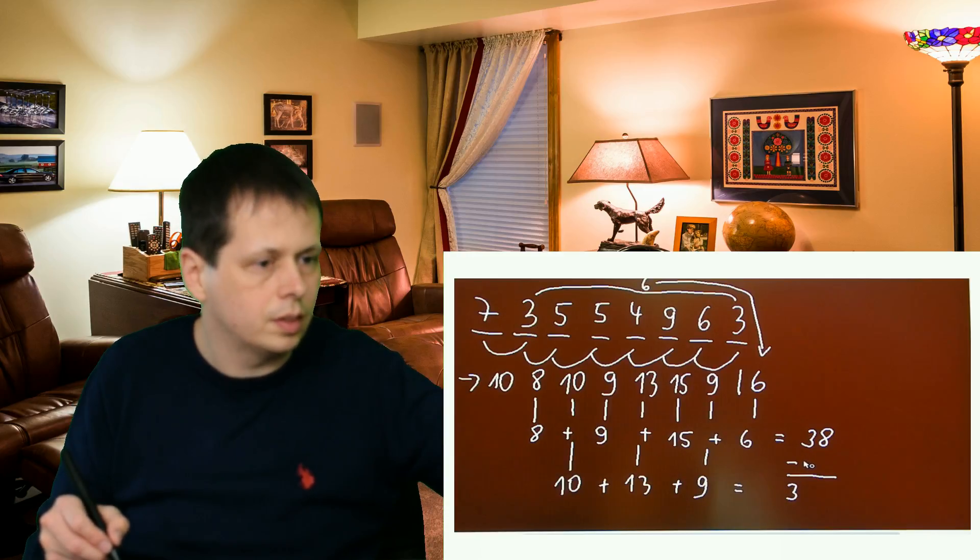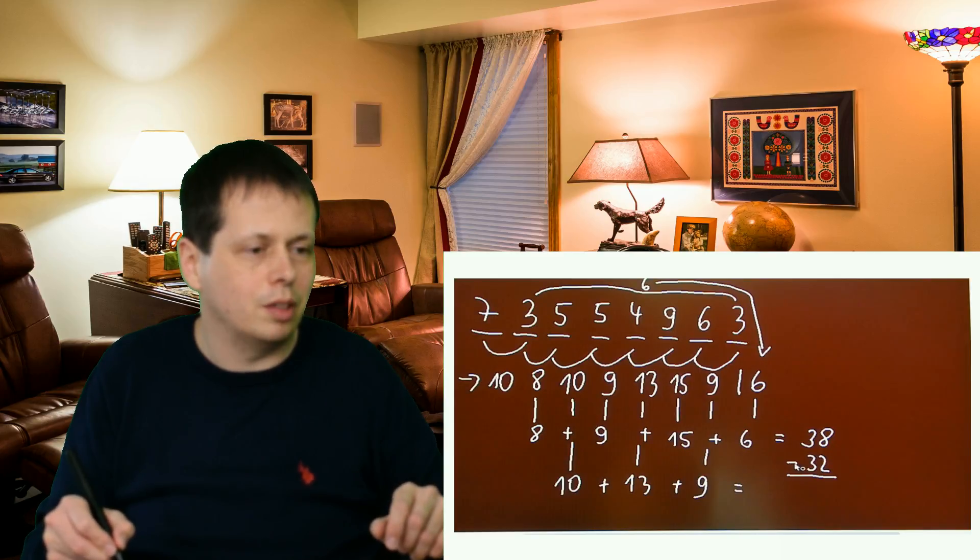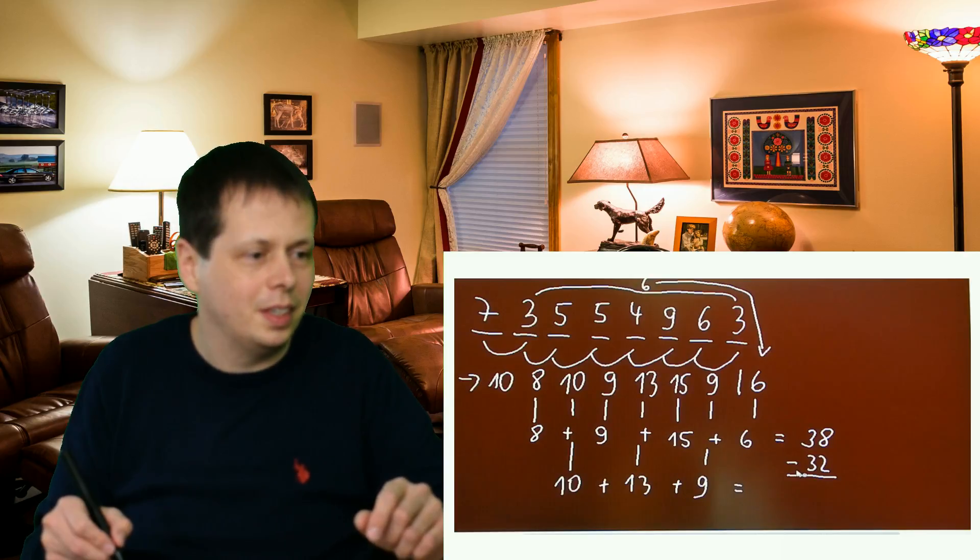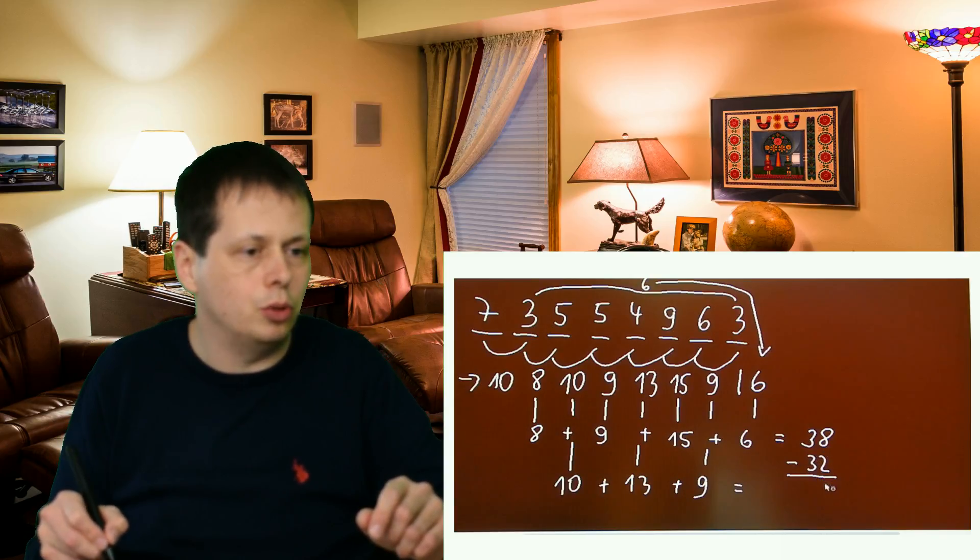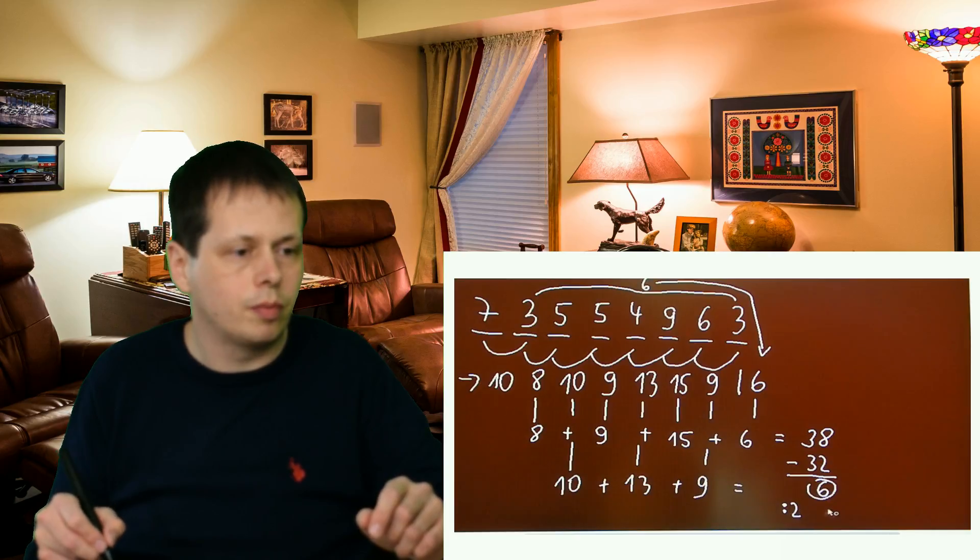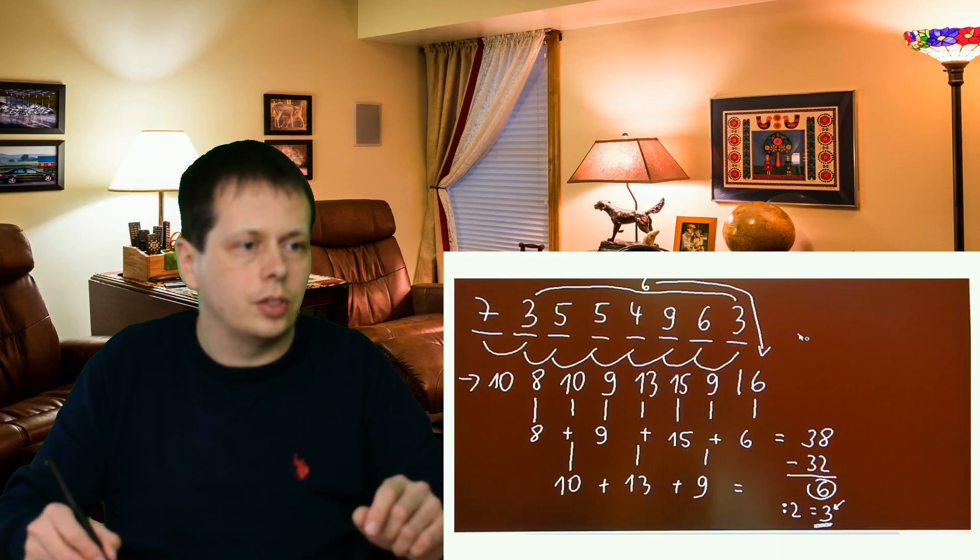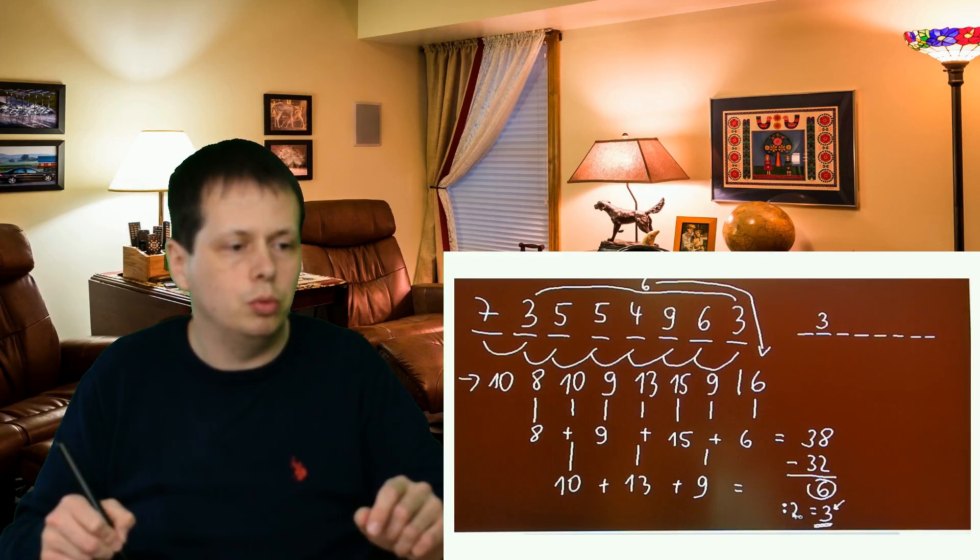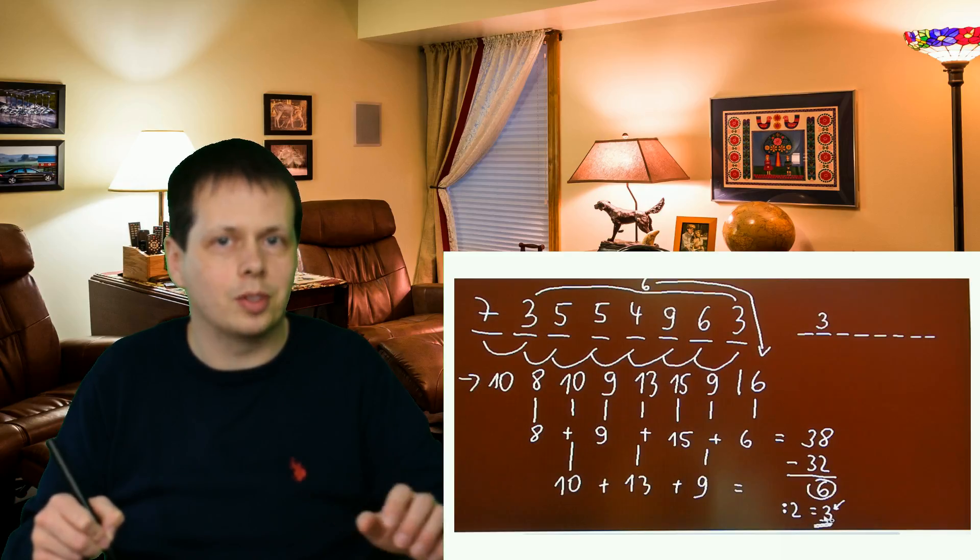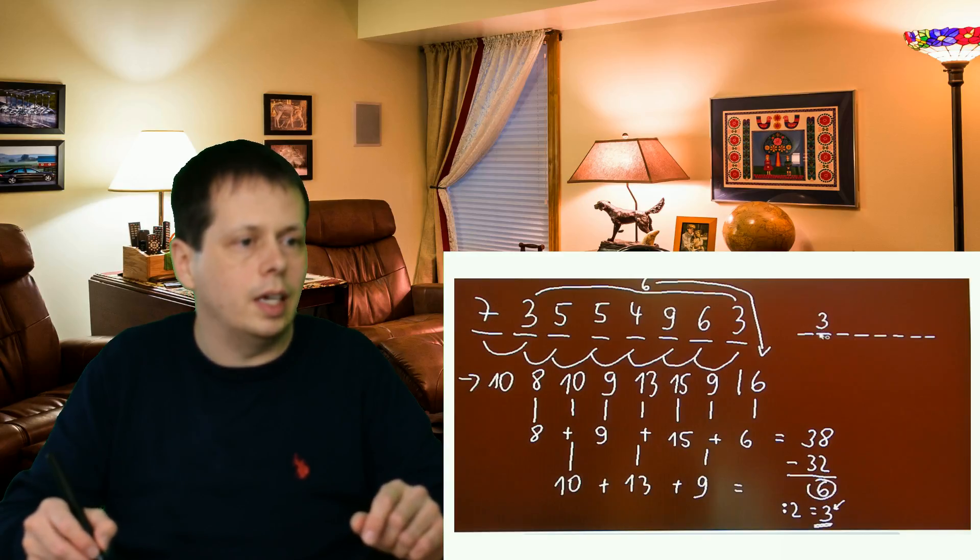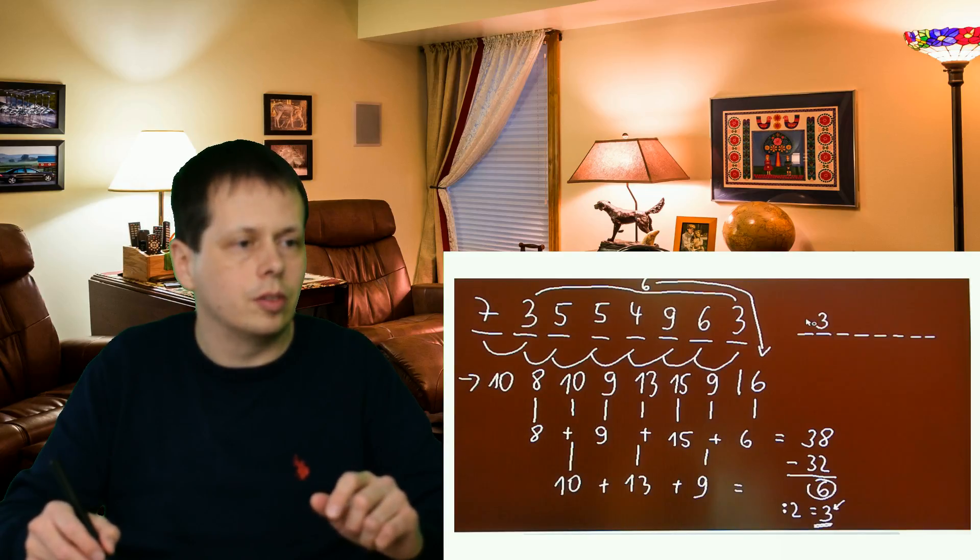38 minus 32 is 6, and what we have to do is divide this number by 2, and the result is 3. This digit is the second. It's always divided by 2, and this is always the second number. It works anytime.